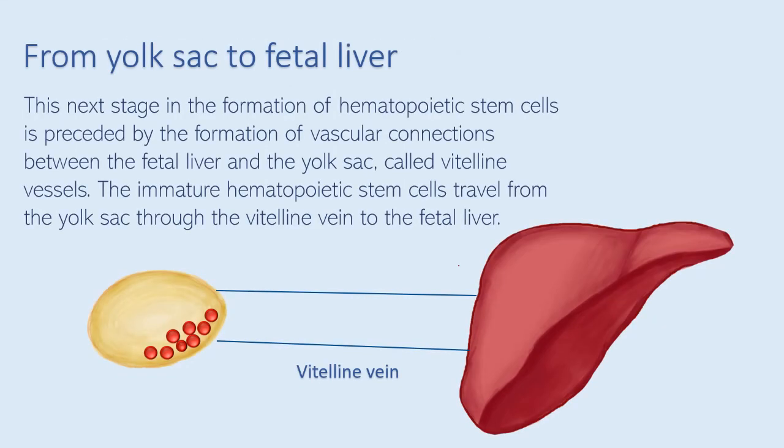The next stage in the formation of hematopoietic stem cells is preceded by the formation of vascular connections between the fetal liver and the yolk sac, known as vitelline vessels. The immature hematopoietic stem cells travel from the yolk sac through the vitelline vein to the fetal liver.